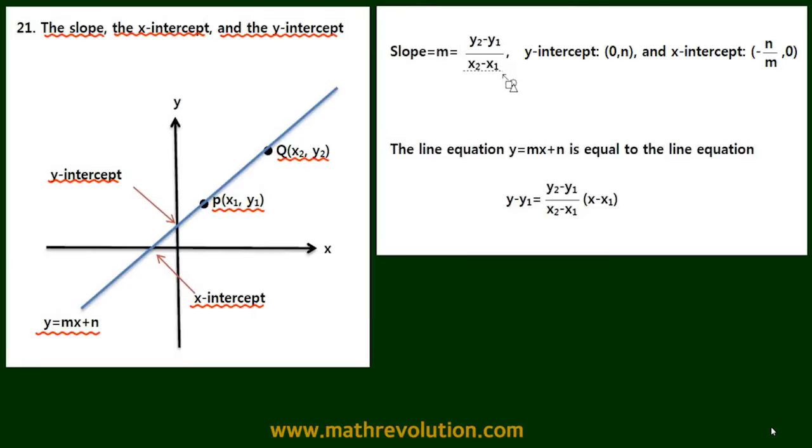The slope m equals y2 minus y1 over x2 minus x1, y-intercept is (0, n), x-intercept is (-n/m, 0), and this is the line equation.